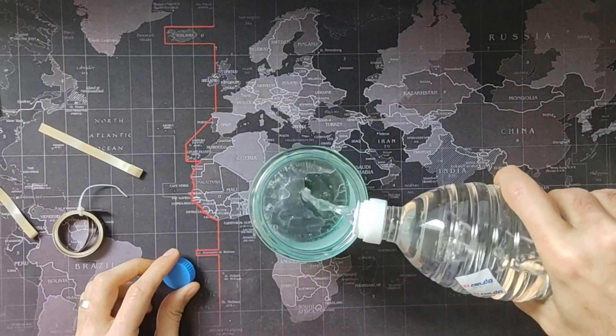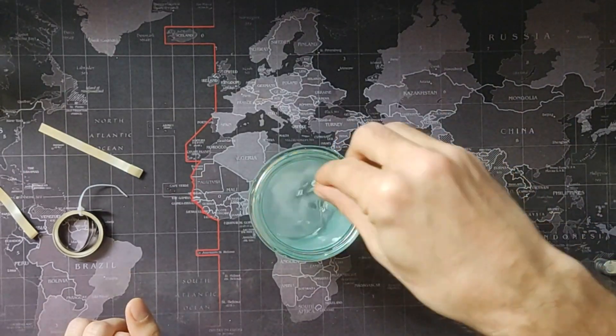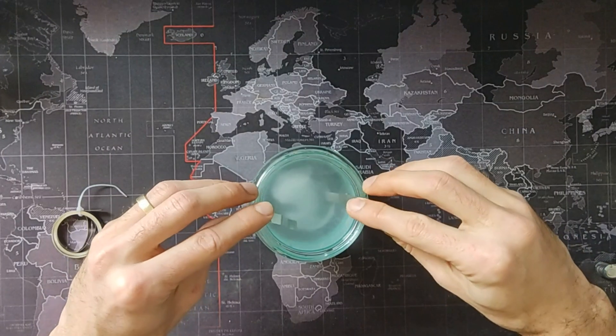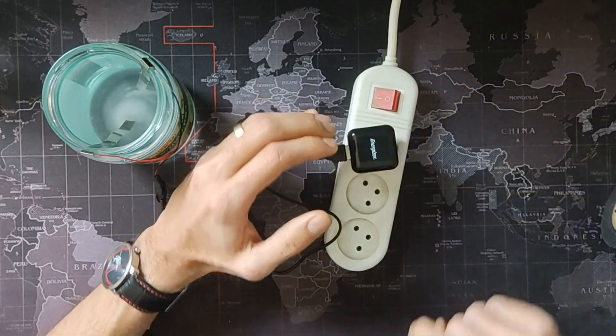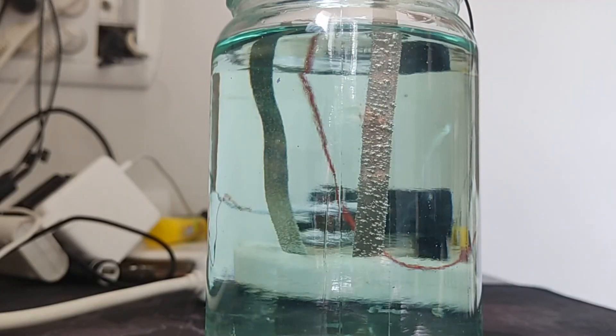Fill the jar with vinegar, add salt, and stir well. Hang nickel strips on the jar, connect the wires, and connect to a power source. Watch the bubbles form for two hours.